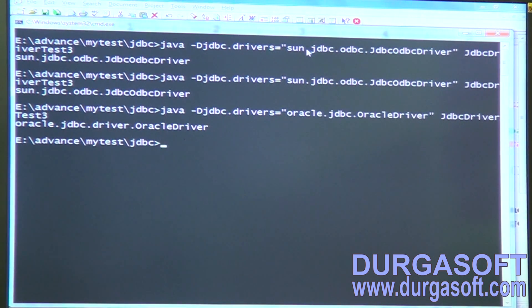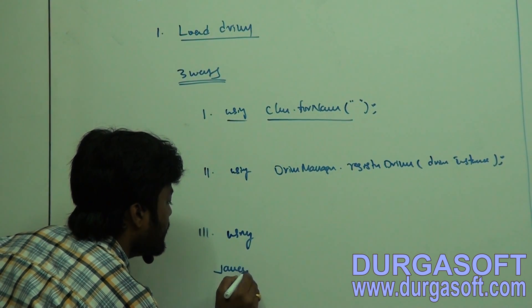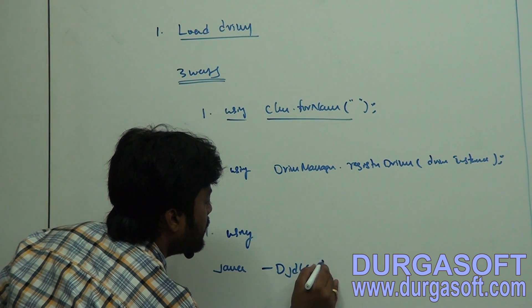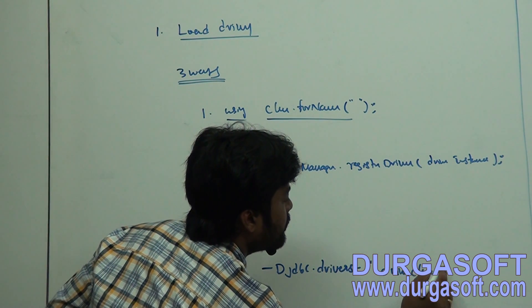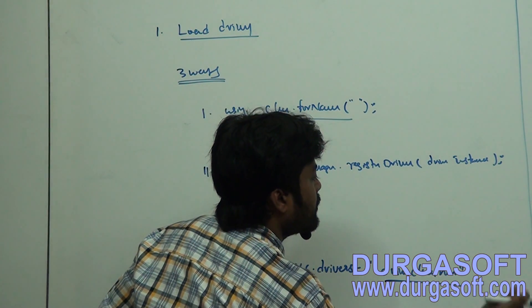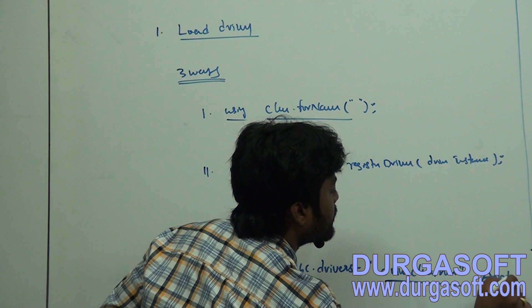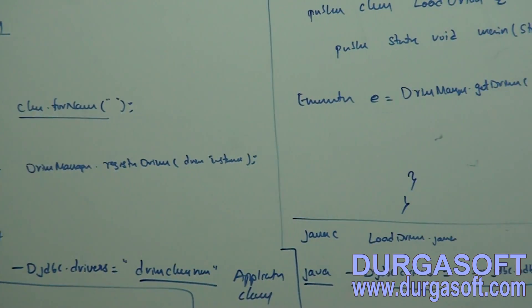Now the Oracle driver is loaded into the JVM. So these are the three approaches to load a driver into the JVM: by using Class.forName(), or by using DriverManager.registerDriver(), or by using system properties — by passing the command at the command prompt using the -D JVM flag before running your application class.